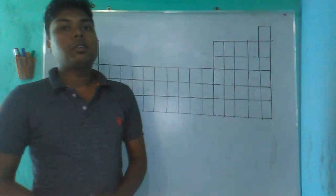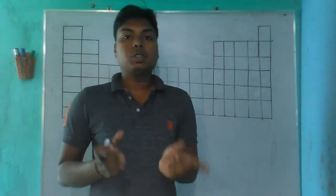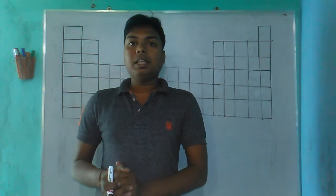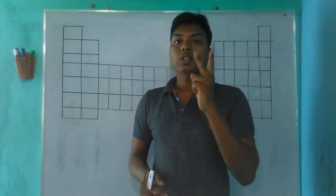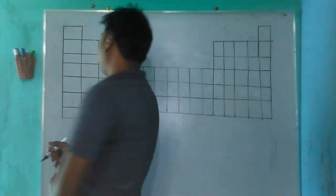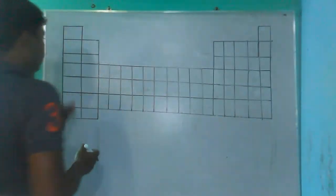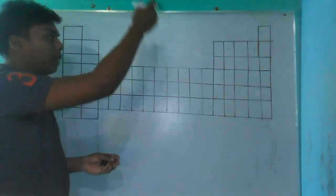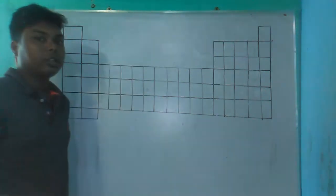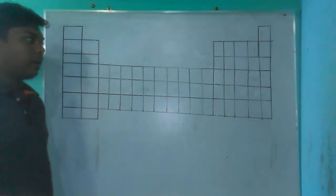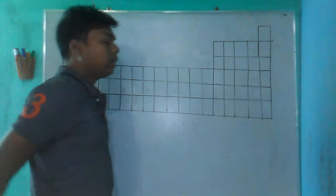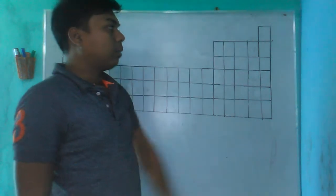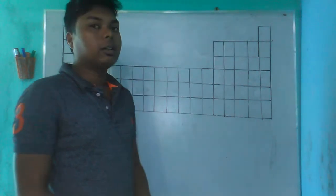So if the last electron goes into S, P, D or F, the element is classified into the corresponding block. This is all about groups — vertical lines in the periodic table give us 18 groups.